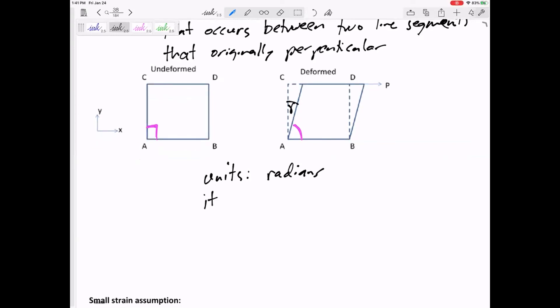And maybe I'll say sometimes it matters which corner you are considering. But anyway, the shear strain of corner A in this scenario would be that angle. You just have to look at corner A and see how it has changed from its original 90 degrees.